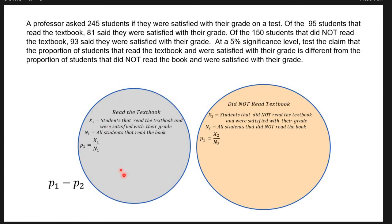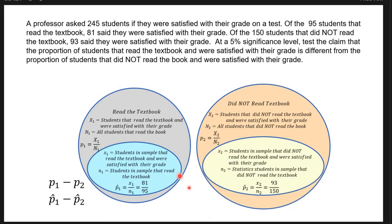Since we can't survey all students, we take samples. X1 = 81 students satisfied who read the textbook, out of N1 = 95 total who read the textbook. For the second population, X2 = 93 students who didn't read the textbook but were still satisfied, out of N2 = 150 students who did not read the textbook.